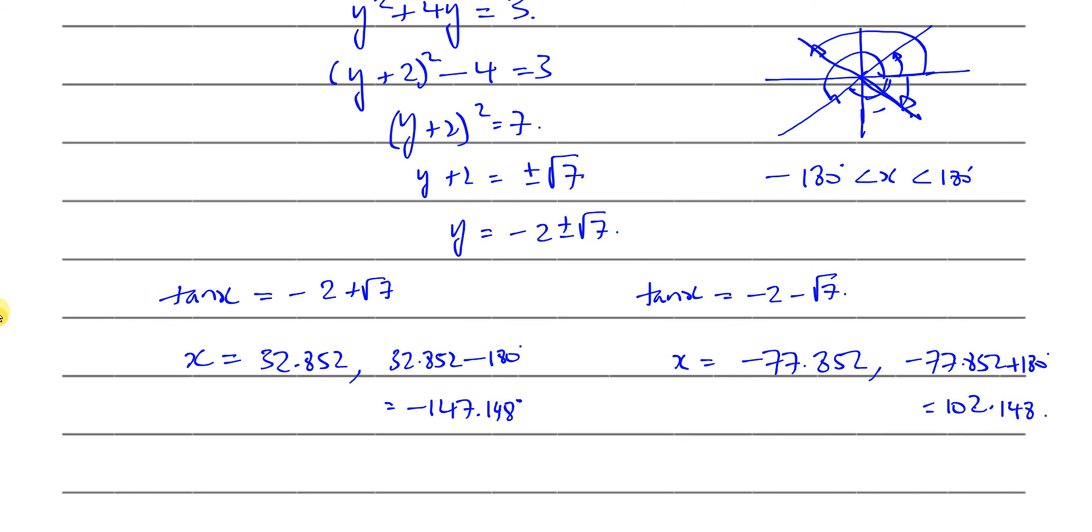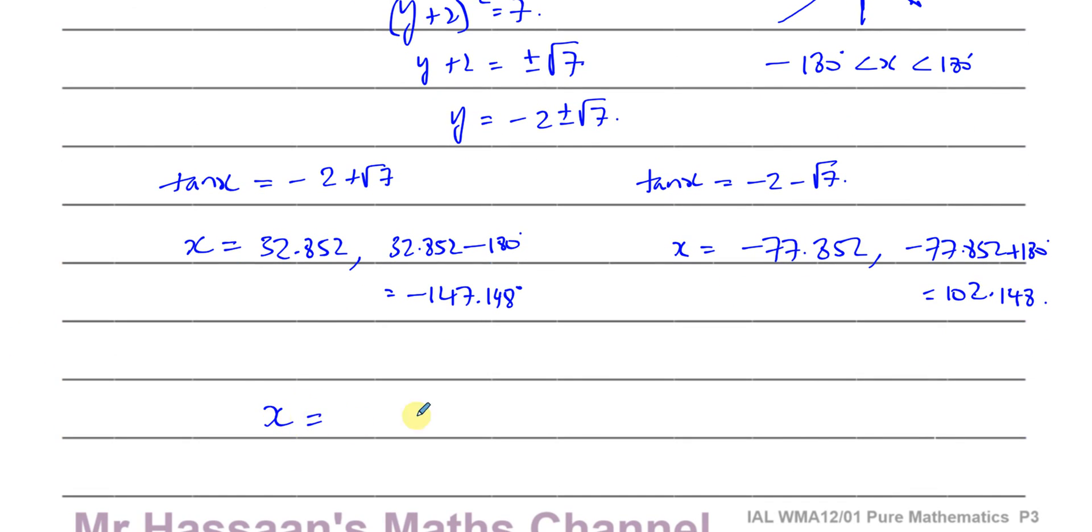So finally, we write down all our solutions together. I'll try to put them in order of size. So you have minus 147.1 degrees to one decimal place. The next one in order of size is minus 77.9 degrees to one decimal place. Then you have 32.9 degrees. And you have, finally, 102.1 degrees. Those are the solutions written in order of size and to one decimal place.